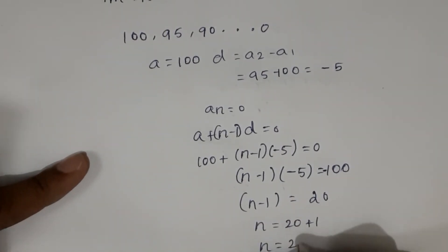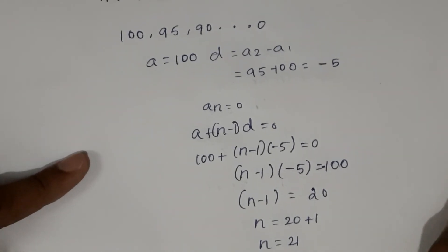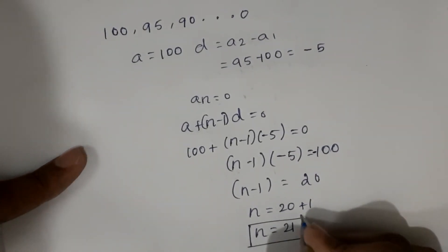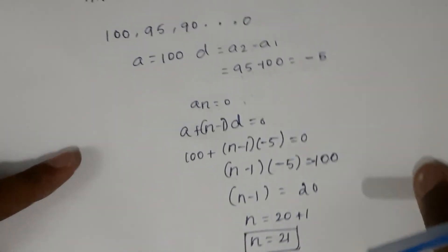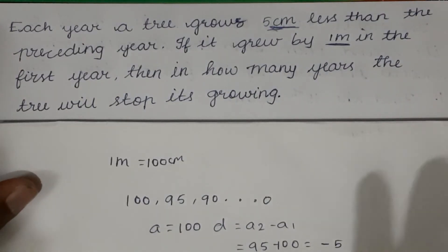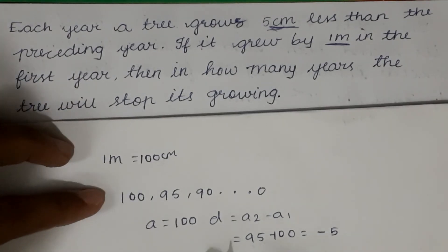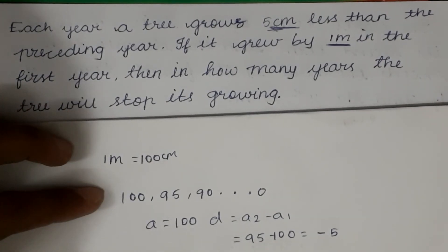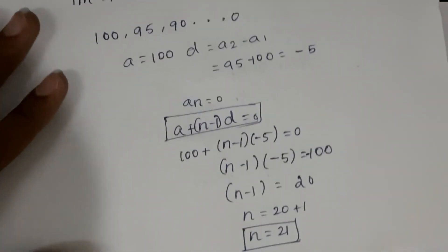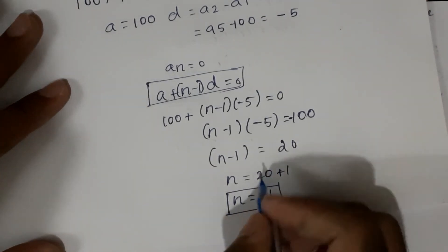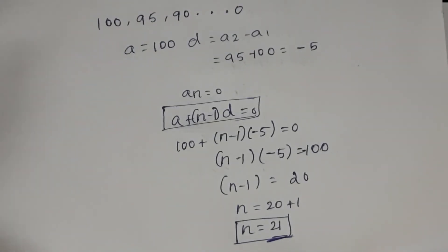Therefore n = 20 + 1, which gives n = 21. In how many years will the tree stop its growth? It will take 21 years to stop the growth of the tree. In this question we should know the formula for an. The answer to the question is 21 years. Thanks for watching, we will see you in the next video.